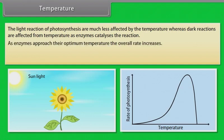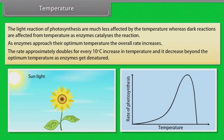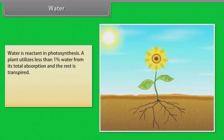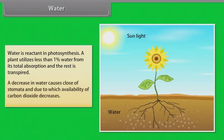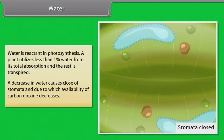As enzymes approach their optimum temperature, the overall rate increases — approximately doubling for every 10°C increase in temperature — and it decreases beyond the optimum temperature as enzymes get denatured. Water is a reactant in photosynthesis; a plant utilizes less than 1% of its total absorbed water, with the rest transpired. A decrease in water causes stomata to close, reducing availability of carbon dioxide.